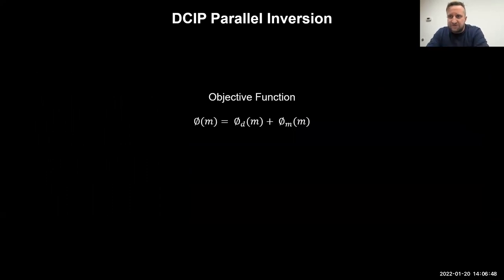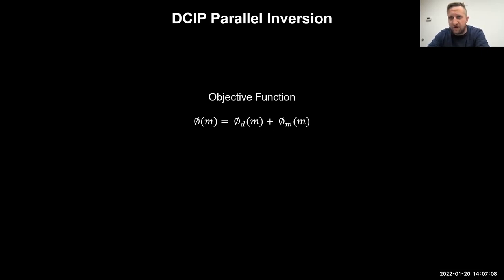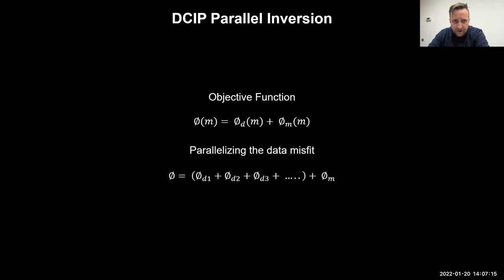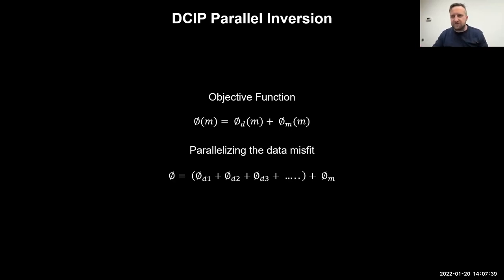Starting with the objective function — that's where all our meat is and what we're trying to minimize. Using the Simpeg framework, we have this misfit object that holds a simulation, and each simulation contains a computational mesh, a survey mesh, and the data. Those are heavy concerns all contained in one object. So this looks like a good place to start — let's try parallelizing the data misfit, breaking everything down into its own simulation. Each misfit is only concerned with its own data and its own mesh, with the mesh refined to the extent of the active electrodes per group of transmits.